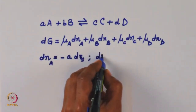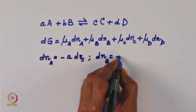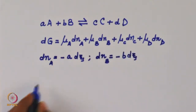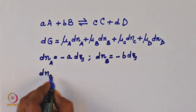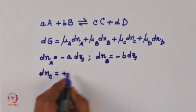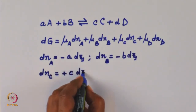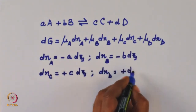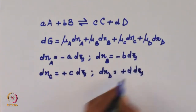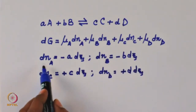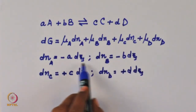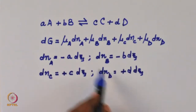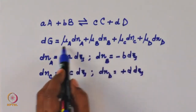Similarly, dN_B, since B is being consumed, will be minus the stoichiometric number b times dξ. And dN_C will be plus c times dξ, and dN_D is equal to plus d times dξ. So, in terms of the extent of reaction, we now have expressions for dN_A, dN_B, dN_C, and dN_D which can be substituted in the earlier expression.